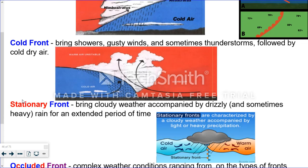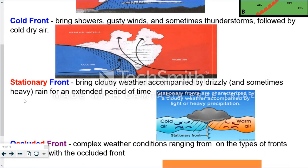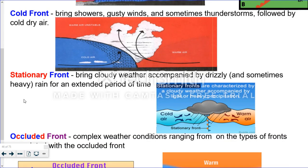A stationary front brings cloudy weather accompanied by drizzly and sometimes heavy rain for an extended period of time. That's when you have those weekends or those weekdays where it just seems like it rains forever, and it's not bad, but it's just days and days of rain. That's because one front is not strong enough to move the other front out of the way.